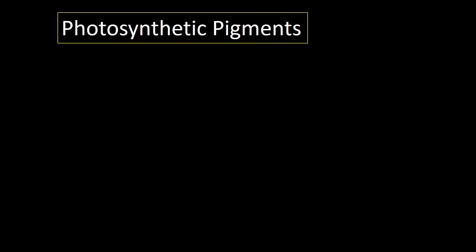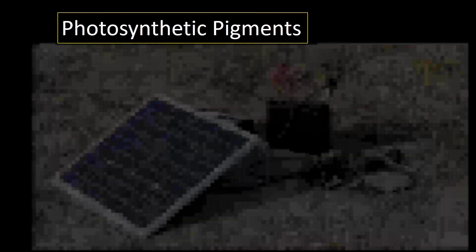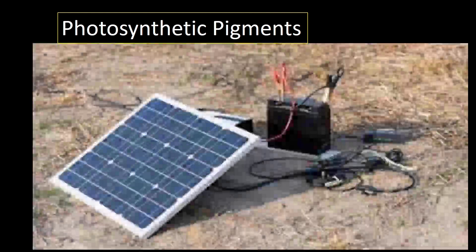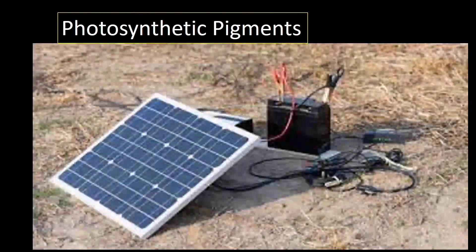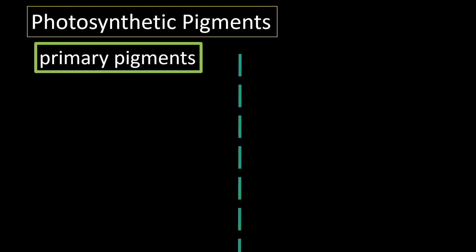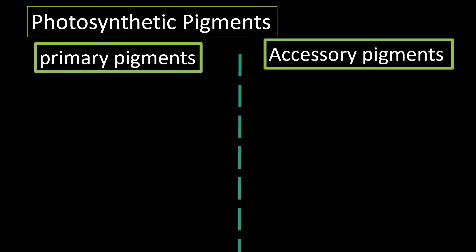Photosynthetic pigments harvest sunlight, similar to how solar panels collect light. Photosynthetic pigments are of two types: primary pigments and accessory pigments.